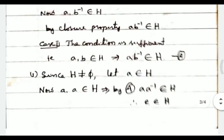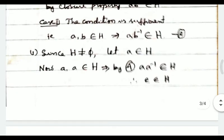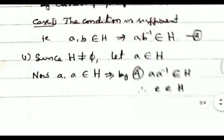Case two: the condition is sufficient. Suppose a, b belongs to H implies ab inverse belongs to H. Since H is non-empty, let a belong to H. Taking a and a: a, a belongs to H implies aa inverse belongs to H, which means the identity e belongs to H. Now, since e and a belong to H, by the condition, ea inverse belongs to H, so a inverse belongs to H for all a in H.